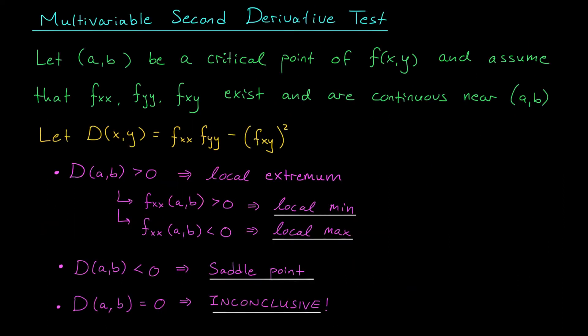Alright, here it is folks, one of my favorite results from this part of the course, the multivariable second derivative test. It says the same sort of thing as the test you know from calc 1. It allows us to classify a critical point as a local max, a local min, or a saddle point, though sometimes it can be unsuccessful.